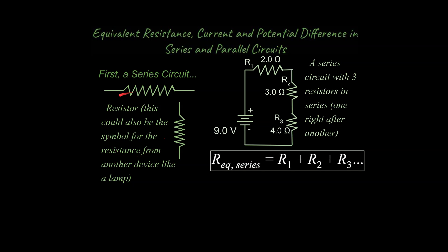Thinking about a series circuit, we've got a symbol inside a circuit diagram of a resistor — this one's a little longer, and these are shorter symbols for resistors. We use circuit diagrams because it's easier to use symbols than to draw actual objects. This represents a battery or power source, and these are resistors. Resistors impede the flow of charge but can also be devices that use energy, like a light bulb or an electrical appliance.